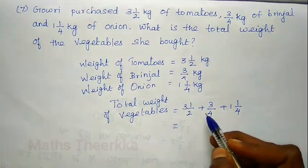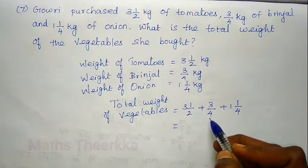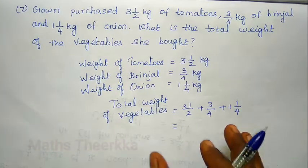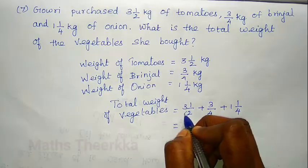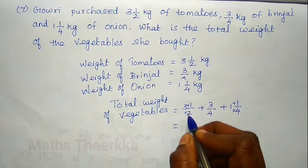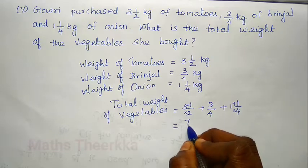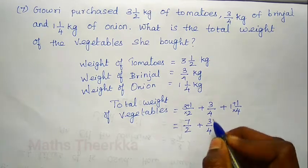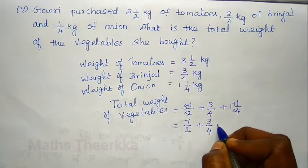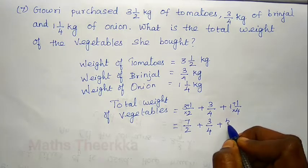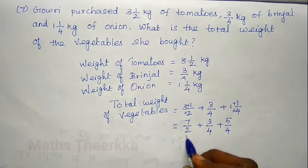First, there is a mixed fraction. We convert the mixed fraction to an improper fraction by multiplying and adding. So: 2 × 3 = 6, 6 plus 1 = 7 by 2, plus 3 by 4, plus 1 — which is 4 plus 1 = 5 by 4.